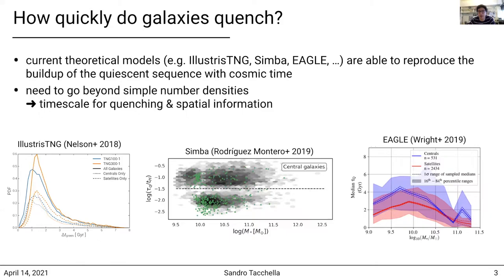I show you here three predictions from different numerical codes. On the left you can see IllustriousTNG, in the middle Simba, and on the right Eagle. In my talk, I will try to show you how we can learn more about the quenching timescale distribution in the galaxy population.